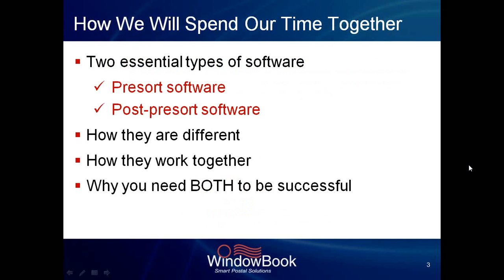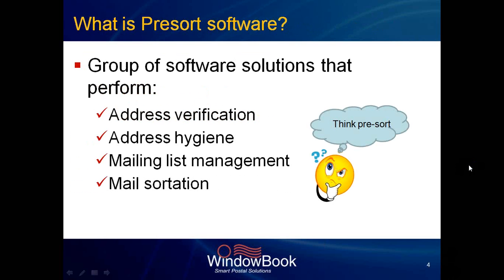As I brought up earlier in the title itself, we're going to talk about the two essential types of software you need to survive and thrive in today's mailing world: pre-sort software and post-pre-sort software. We're going to look at how they differ from each other, how they can work together, and why you need both to be successful.